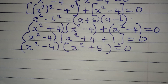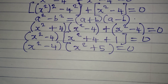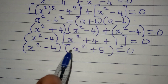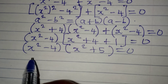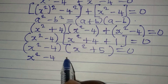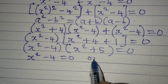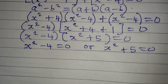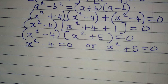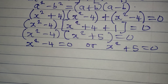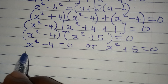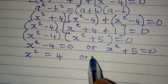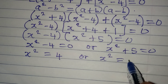At this point we can apply the zero product rule, which says that either or both factors equal zero. So either x squared minus 4 equals 0, or x squared plus 5 equals 0. From the first: x squared equals 4. From the second: x squared equals negative 5.